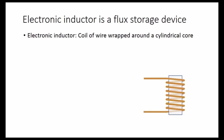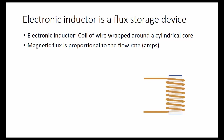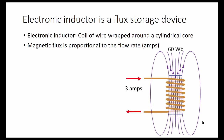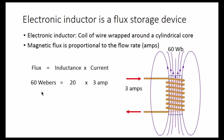Now let's look at the electronic inductor — a coil of wire wrapped around a cylindrical core. The magnetic flux is proportional to the flow rate in amps. For example, 1 amp gives 20 Webers of magnetic flux, 2 amps gives 40 Webers, and 3 amps gives 60 Webers. The flux is proportional to the current, and the constant of proportionality is called the inductance. Here we have 60 Webers equals 20 inductance units times 3 amps.